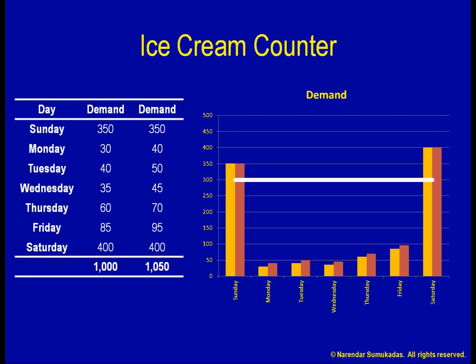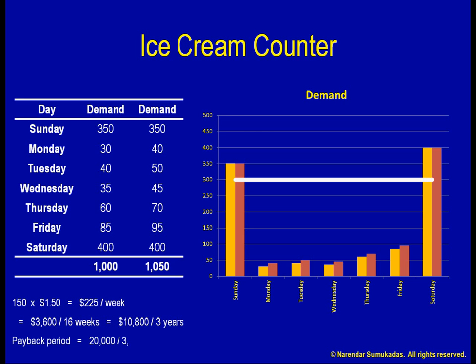If I can convert these 150 potential customers into actual customers each week, I stand to make an additional profit contribution of 150 times $1.50, which equals $225. Over a 16-week season, I will make an additional $3,600, or $10,800 over three years. Unfortunately, that is not enough to pay back my investment within three years. My investment will be paid back within 5.55 years. So, I should not consider investing in the ice cream counter expansion.